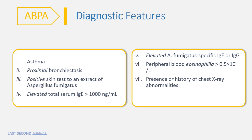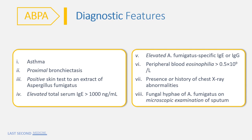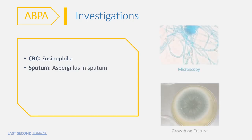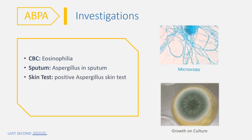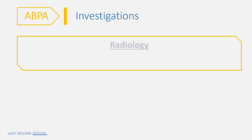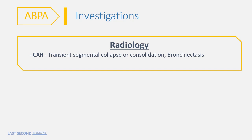In ABPA, fleeting abnormalities on the chest X-ray can be seen, and fungal hyphae of Aspergillus fumigatus may be detected on microscopic examination of sputum. Investigations include CBC which may show eosinophilia, sputum microscopy showing Aspergillus, positive allergic skin test, raised total and Aspergillus-specific IgE antibodies, positive serum precipitins, and on X-ray transient or fleeting segmental collapse or consolidation. High resolution CT scan of the chest will show typical features of ABPA, that is proximal bronchiectasis, which may occupy up to the inner two-thirds of the chest CT field.